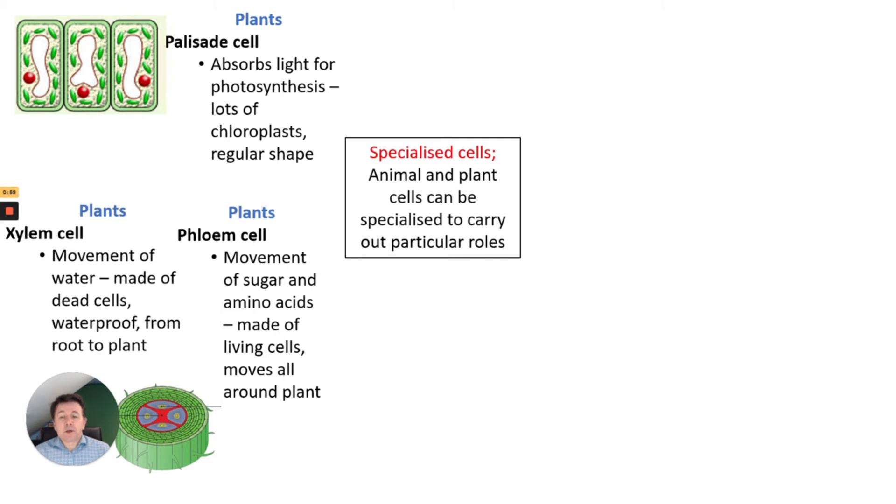Phloem cells move sugars and amino acids. They're made of living cells and they move these things all around the plant, up and down. They require energy from respiration, so mitochondria are required to move the sugars up and down the plant.